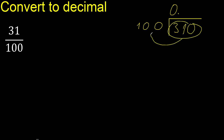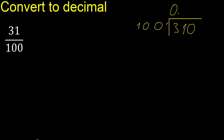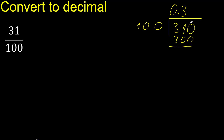0 point is not less, therefore 100 multiplied by which number is nearest to 310 but not greater. Multiplied by 4 is 400, which is greater. Multiplied by 3 is 300. Subtract — the remainder is 10.